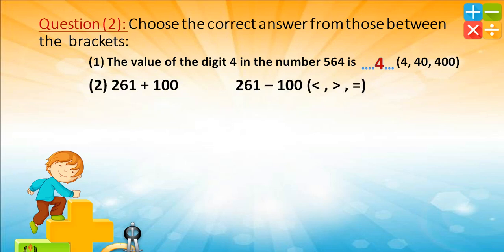261 plus 100, or 261 minus 100 — which one is greater? When we add 100 the result is greater. 261 plus 100 equals 361, but 261 minus 100 equals 161. So 361 is greater than 161. Excellent!